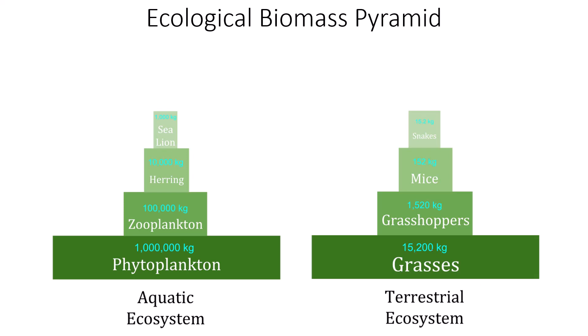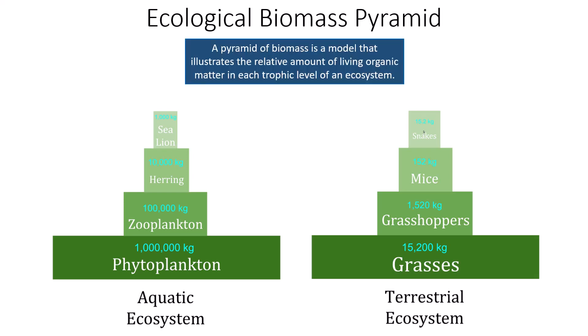In a terrestrial ecosystem example, all the grass blades in a particular zone weigh 15,200 kg. That can support 1,520 kg of grasshoppers, which can support 152 kg of mice, which can support 15.2 kg of snake — which, depending on the snake, might be just a handful. A pyramid of biomass is a model that illustrates the relative amount of living organic matter at each trophic level, weighing every organism at that level to get an accurate mass.